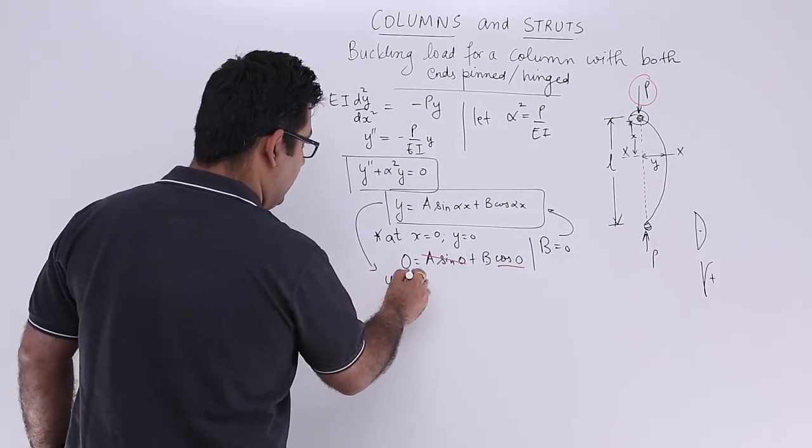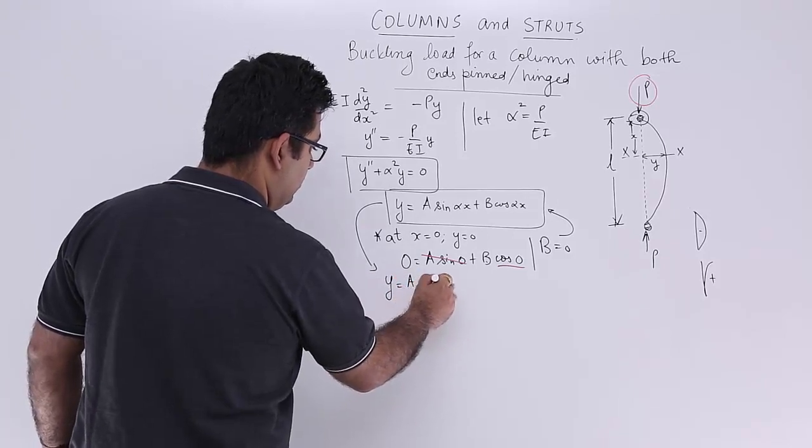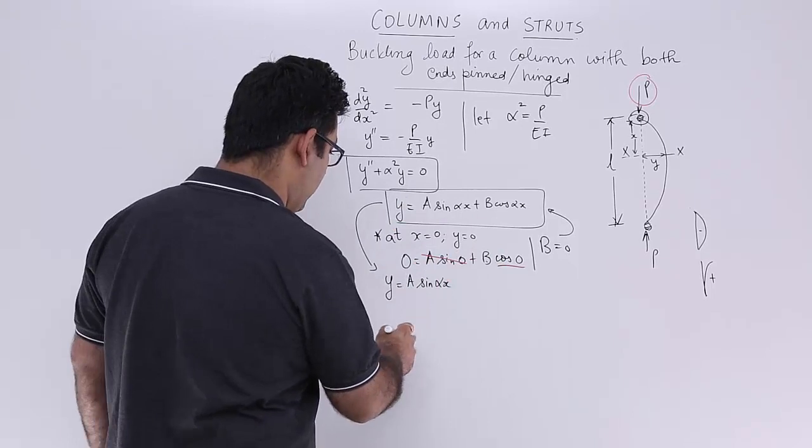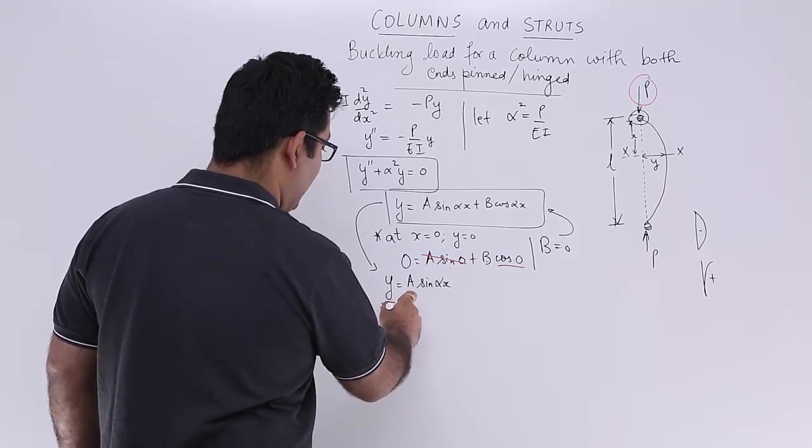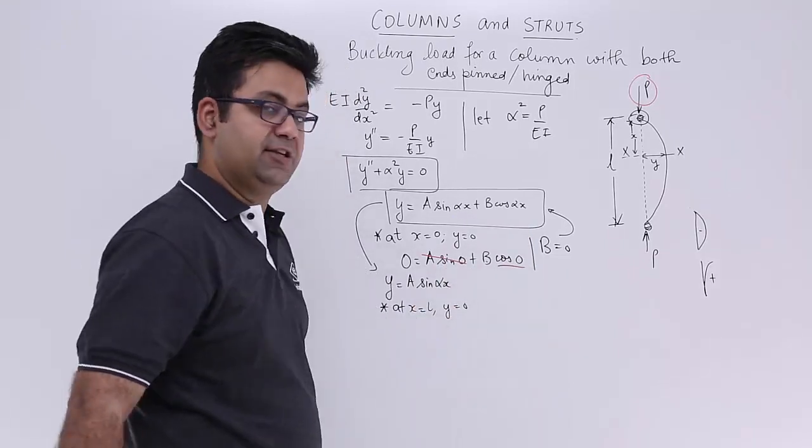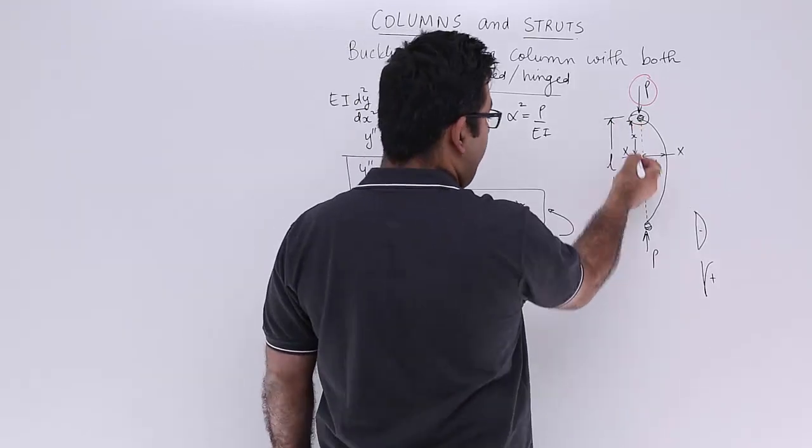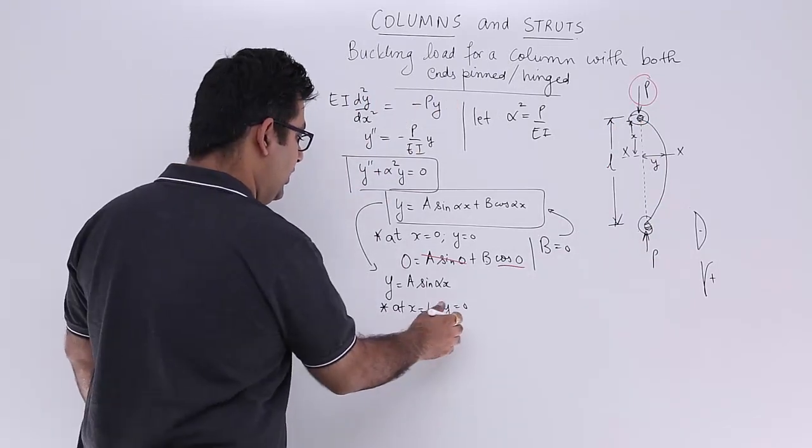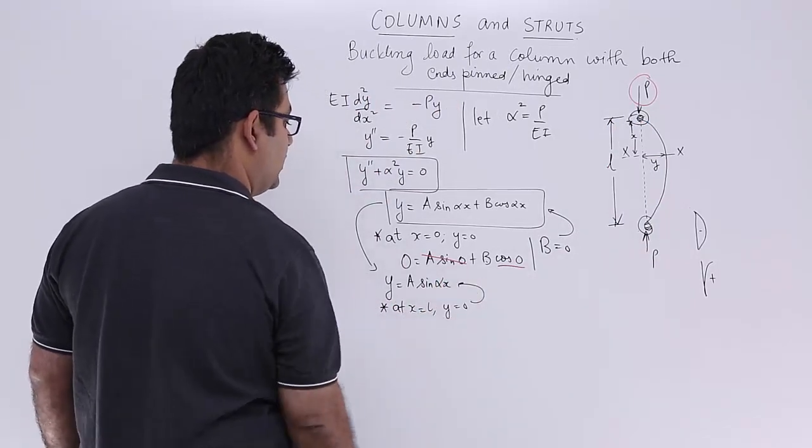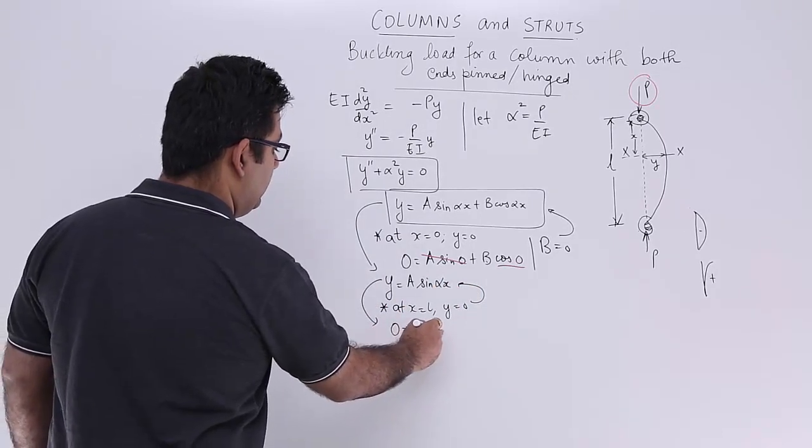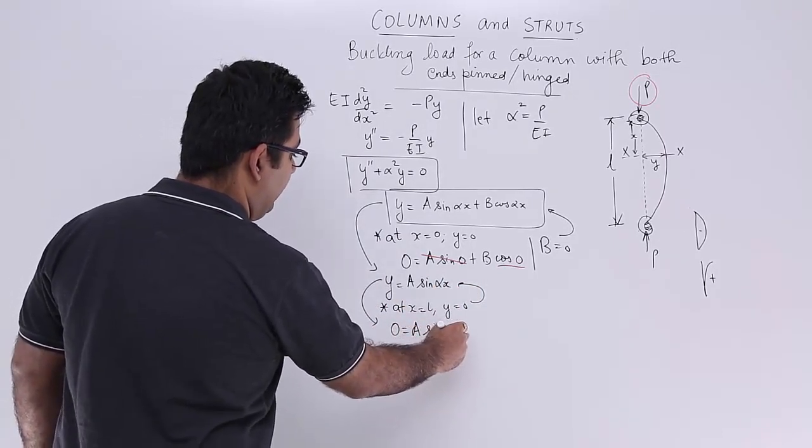Now the next boundary condition is that at x is equal to l as well, the value of deflection is 0. So if you go from this point to this point, again your deflection is 0. So again I will put this boundary condition in this equation. You will get 0 is equal to A sin alpha l.